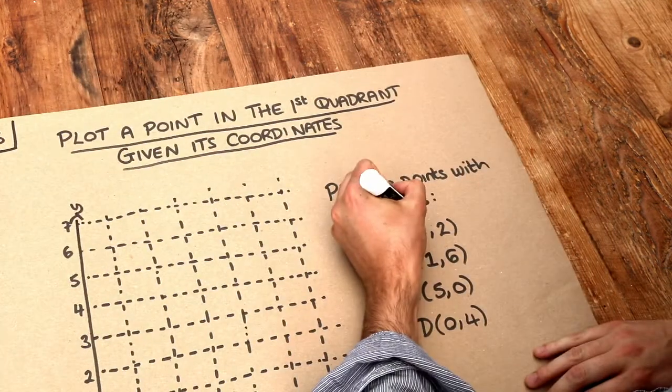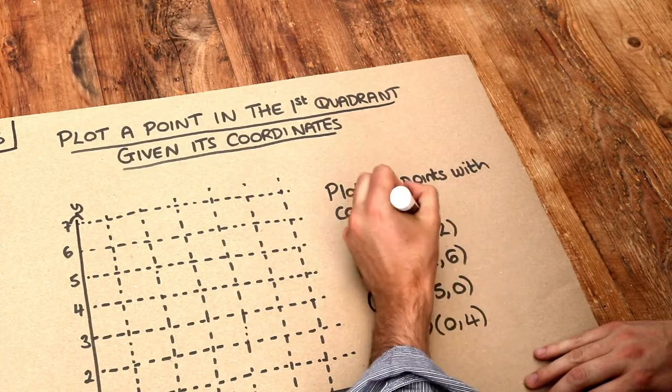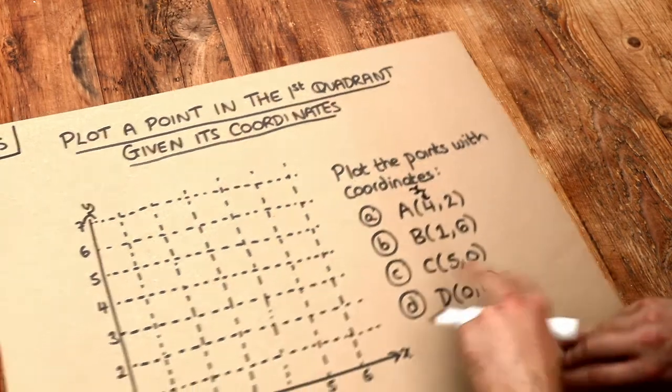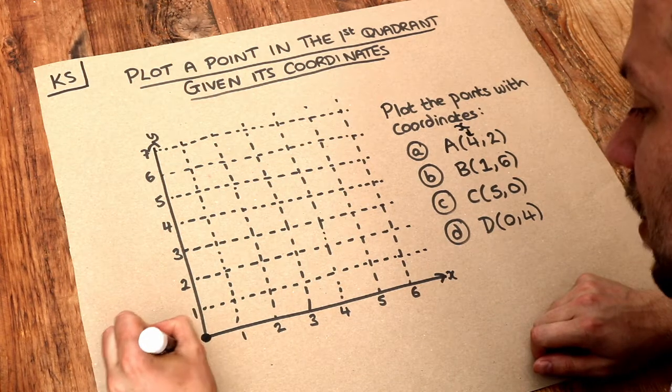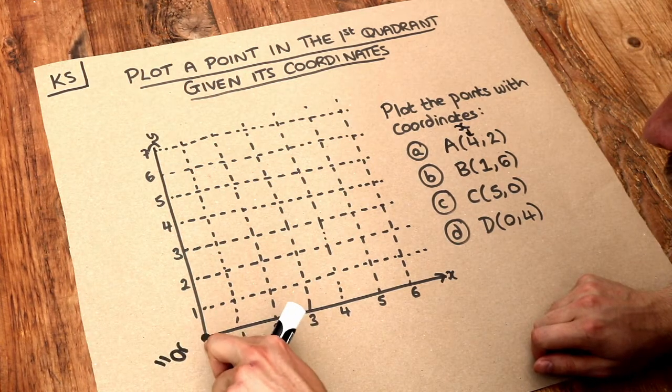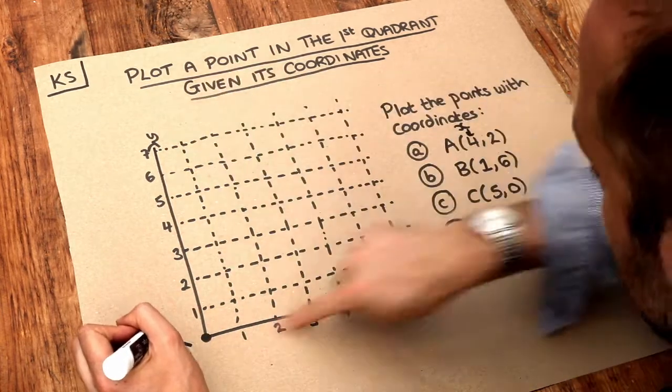Now remember that the first value of this coordinate is the x value, and that's how far we have to go along starting from the origin, which is this point here where the two lines meet.